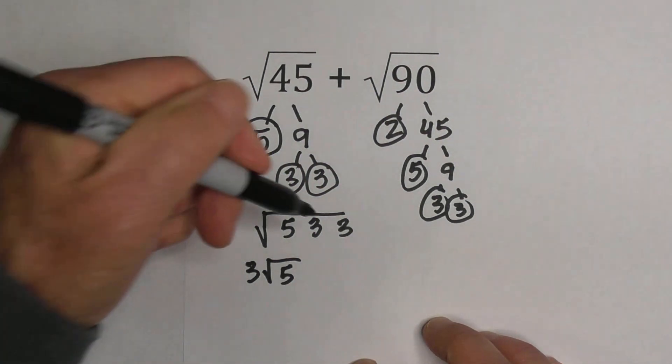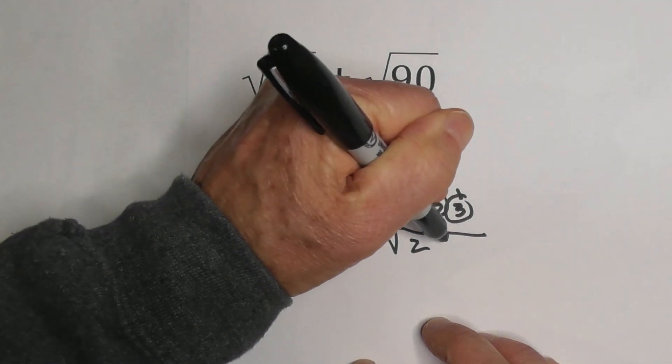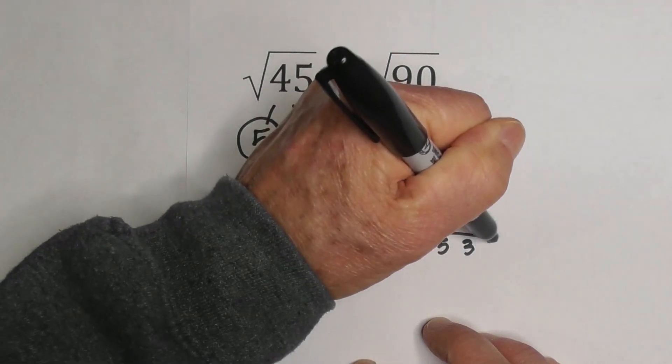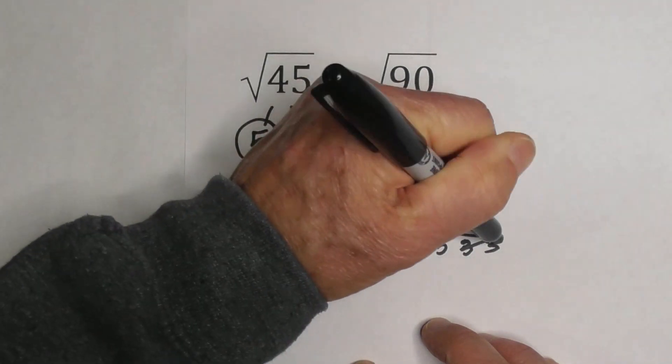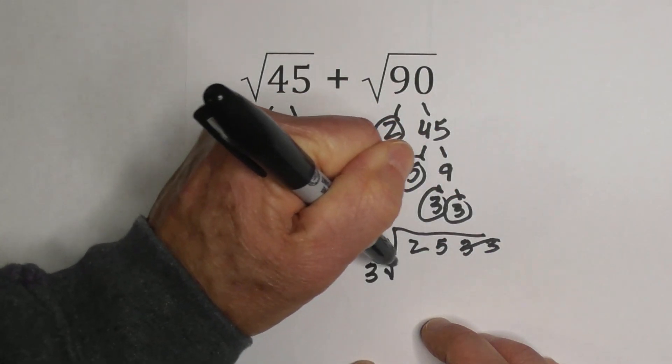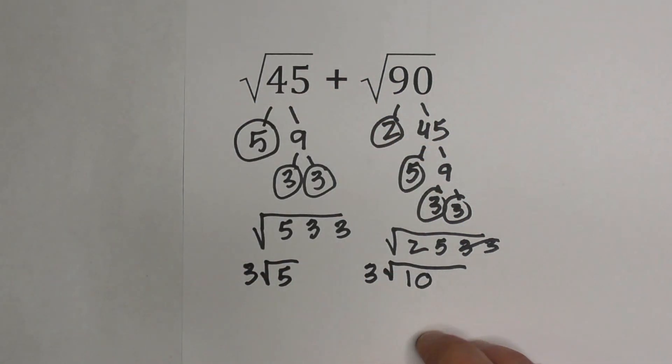Let's see what we can pull out from underneath the square root sign. We have 2, 5, 3, 3. We can pull out a 3, that leaves us with 2 times 5, which is 10. So now we have 3√10.